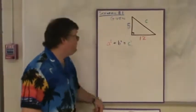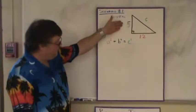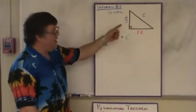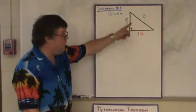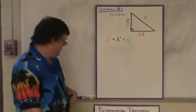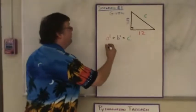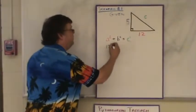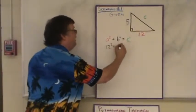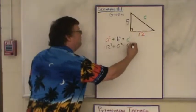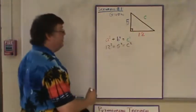Scenario one. Here we are given two legs, one was five, one was twelve. We need to find the hypotenuse. So, we use the Pythagorean Theorem. We plug in our numbers. A is twelve, so we square that. B is five, we square that. And C squared, we don't know what it is, so it stays C squared.